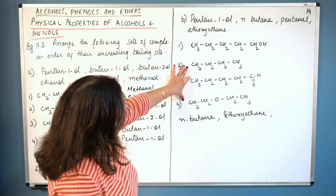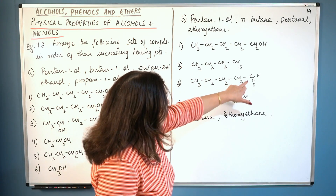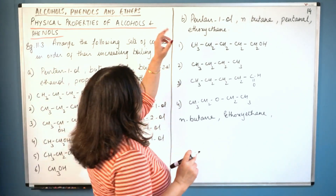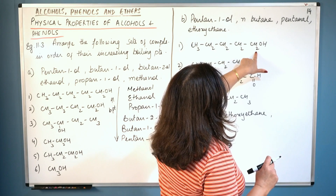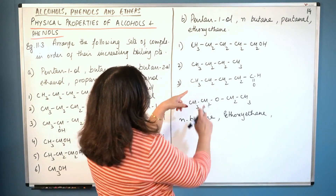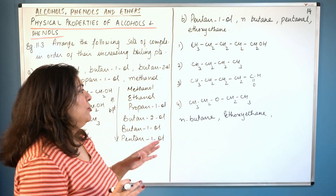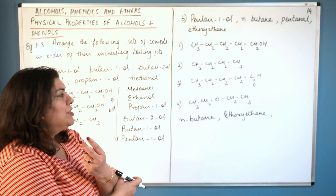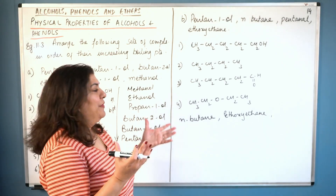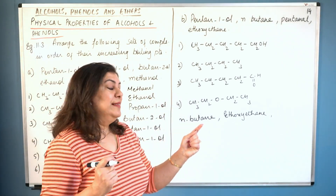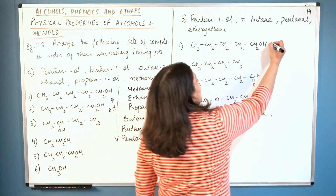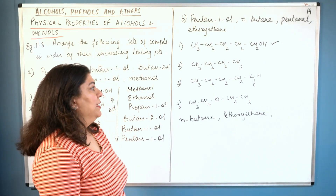Now comparing pentanal and pentan-1-ol: both have five carbon atoms and comparable molecular masses — just a difference of about two atomic mass units, which is not much. We know that when compounds of other functional groups have comparable molecular mass to an alcohol, the alcohol has a higher boiling point. So pentanal comes before pentan-1-ol in the order.